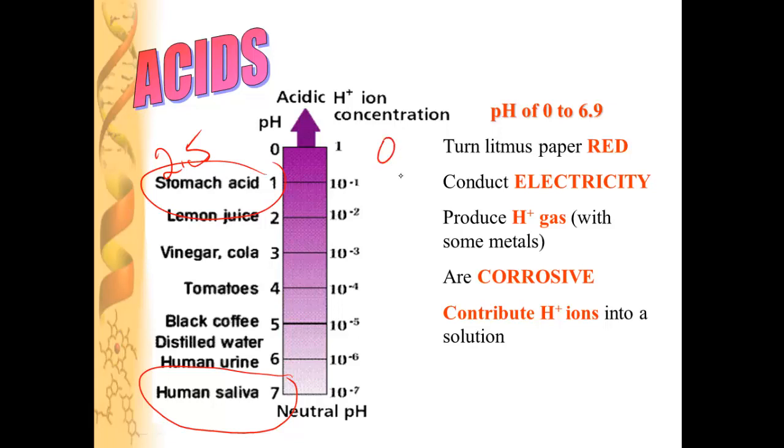pH, therefore between 0 and 6.9, so just below 7, is something that has more hydrogen ions in the solution and is therefore acidic.